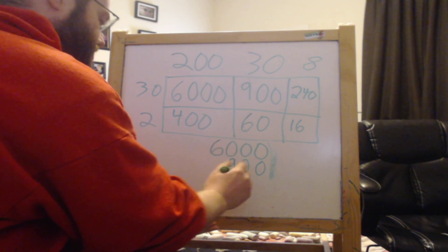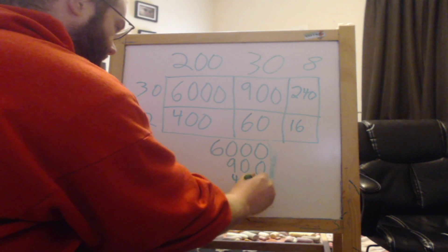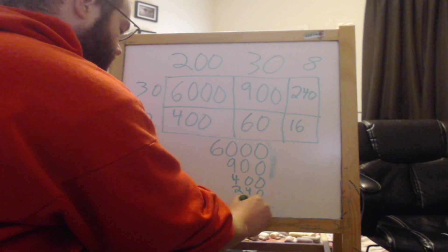Then we go 900. Make sure that each of these are lined up at the ones column, right? 400, 240, 60,